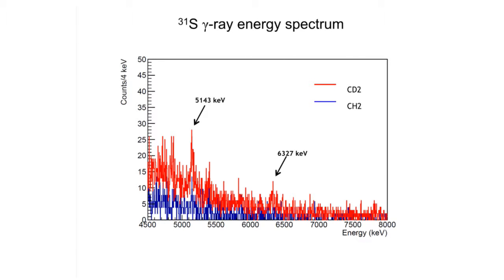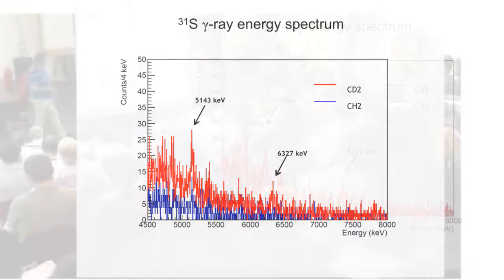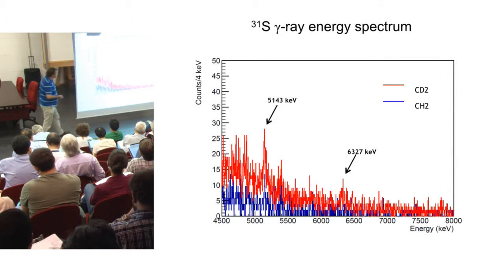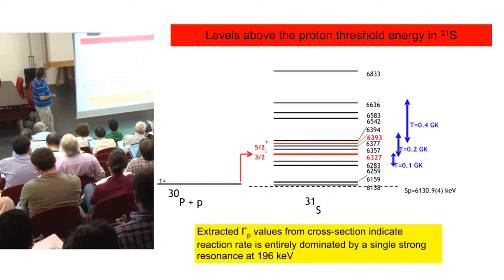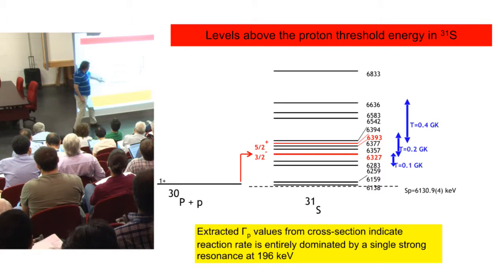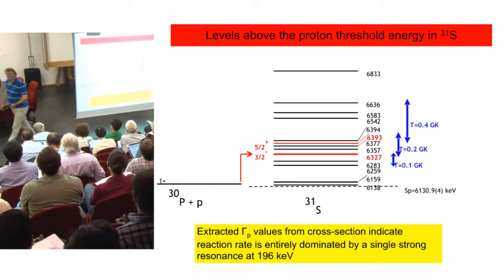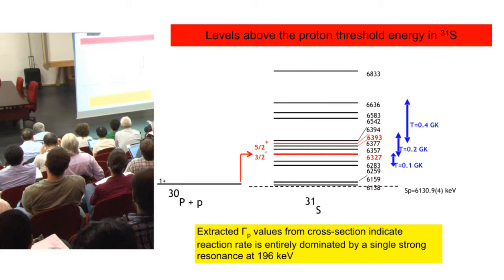The critical thing is this resonance at 6,327 keV, which is produced. This is a direct gamma decay to the ground state, so it's not that efficient — it's a fairly high energy gamma ray. And you can see it's not present when we have just the CH₂. Now this is really remarkable.